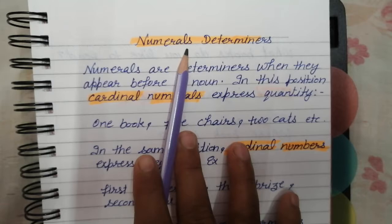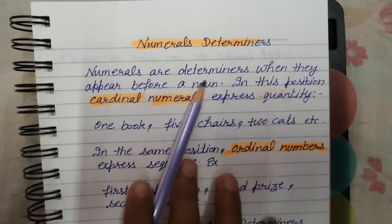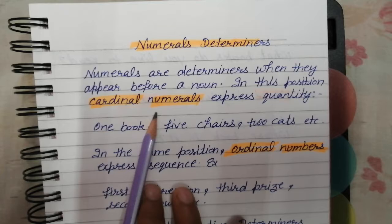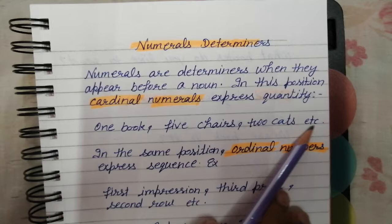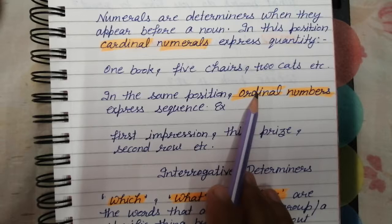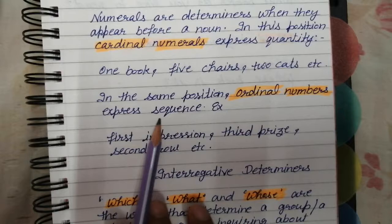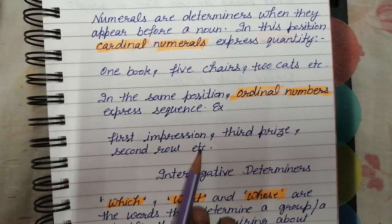Next, numeral determiners — these are number-based determiners that express quantity. For example: one book, five chairs, two cats. In the same position, ordinal numbers like first, second, third, fourth, fifth express sequence — such as first position, second position, third position, first impression, third prize, second row.